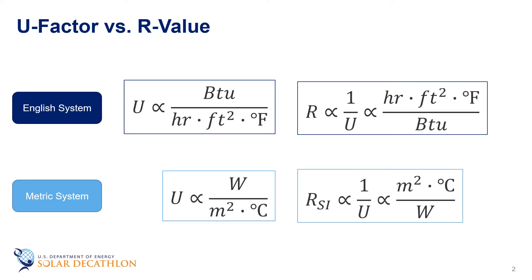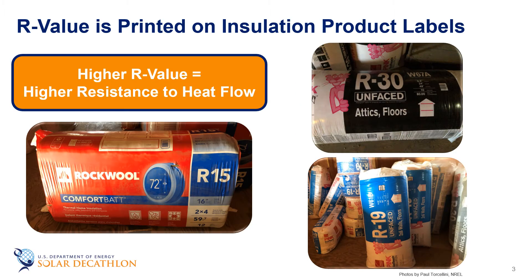In part two of our Fourier's Law episode, we concluded by discussing U-factor and R-value and how they are two different ways to characterize how well heat flows through a wall. U-factor is the wall's thermal transmittance, while its inverse, the R-value, is the wall's thermal resistance. This R-value is often printed on insulation products — the higher the R-value, the more resistance to heat flow.